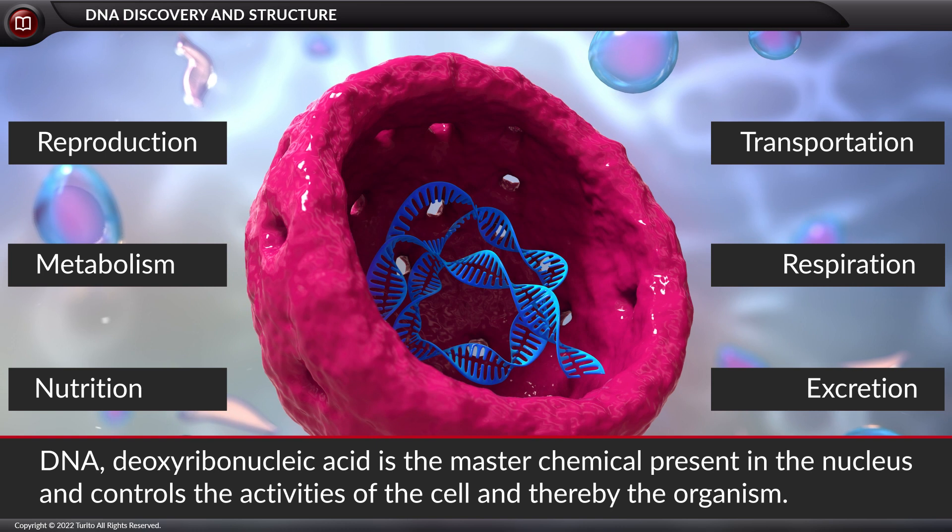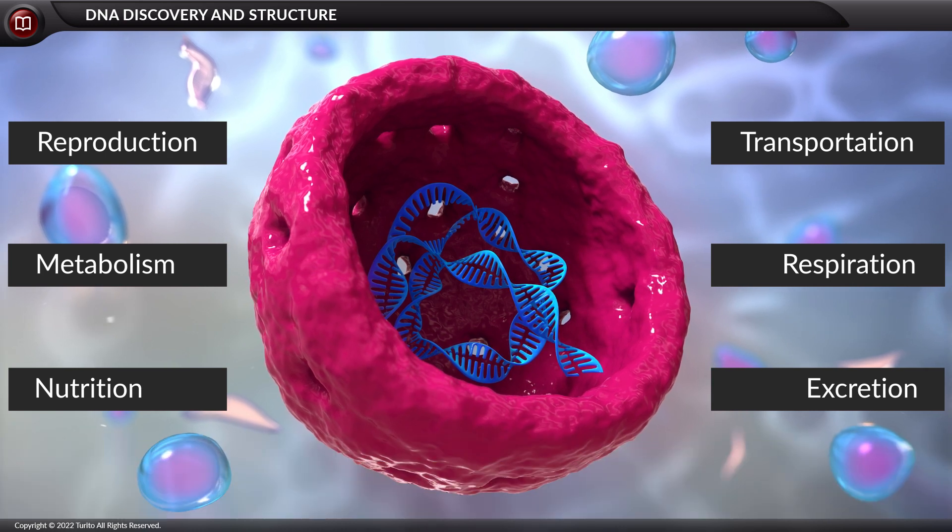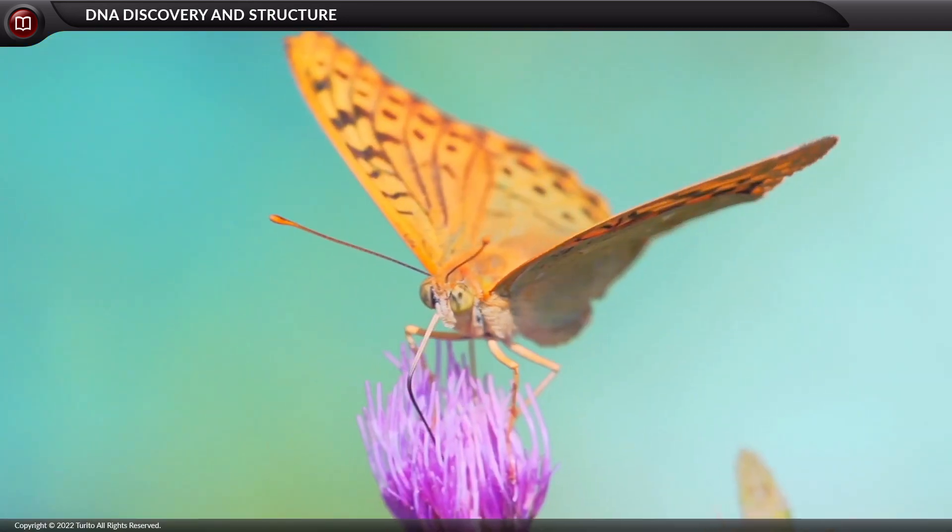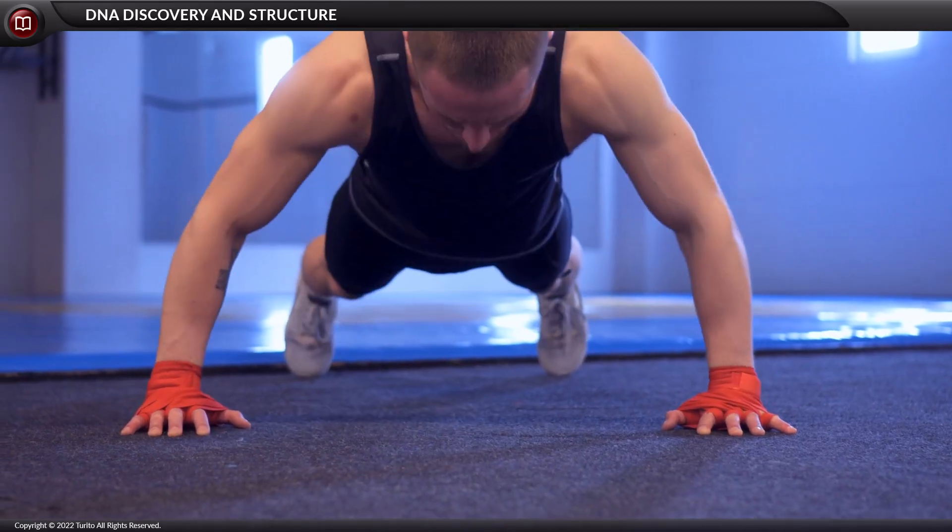Deoxyribonucleic acid is the master chemical present in the nucleus and controls the activities of the cell and thereby the organism. It is the genetic material that is present in most organisms. Let us learn about DNA discovery and its structure.